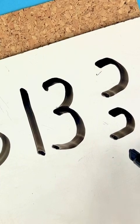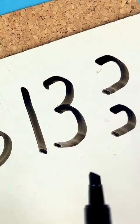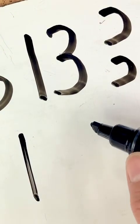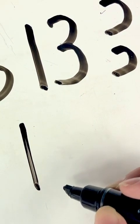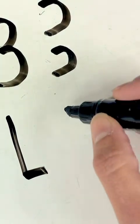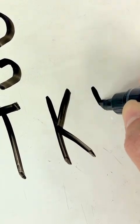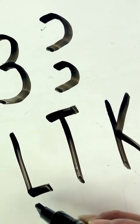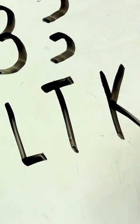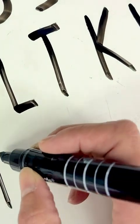Before we get into teaching uppercase B, let's talk about letter formation, because this is one of the letters included in the straight line down letter family. When you look at the uppercase alphabet, several letters include a straight line down — for example, I with the top and bottom, L which goes straight down and then across, T, K, H, M, and N. B is just one more of those letters, and they all start with a straight line down from the top.